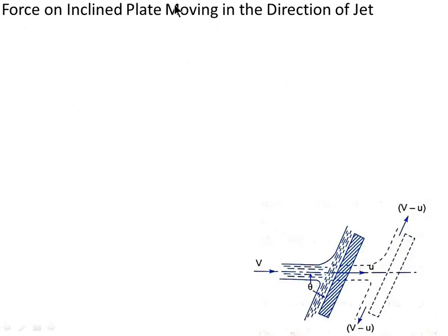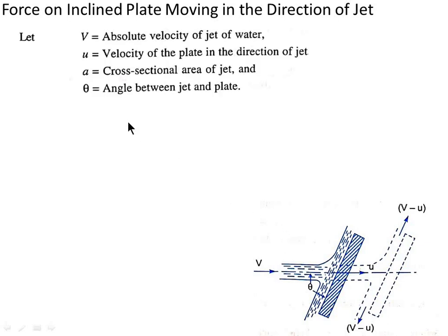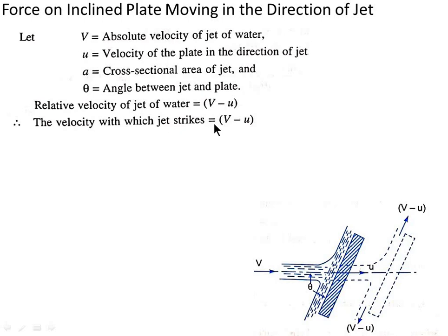This is the diagram where V is the initial absolute velocity of the jet, theta is the angle between the jet and the plate, U is the velocity with which the plate is moving, and (V minus U) is the velocity with which the jet strikes the plate. The relative velocity equals V minus U, and the mass of water striking per second equals rho A (V minus U).